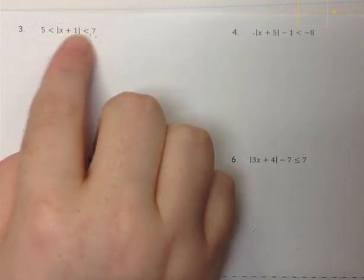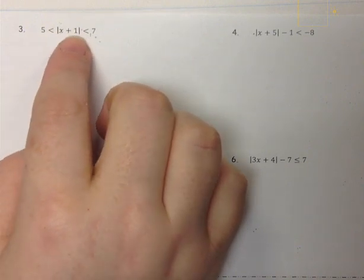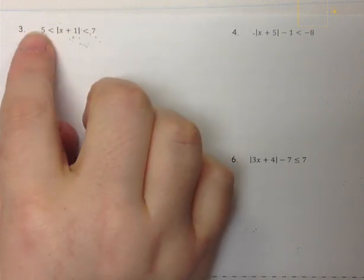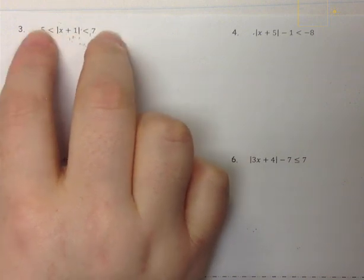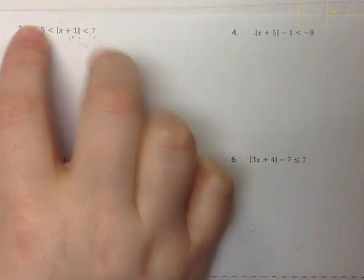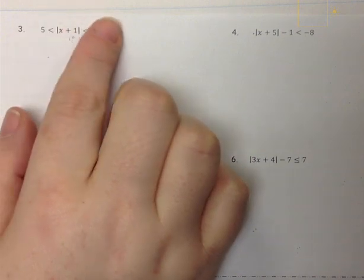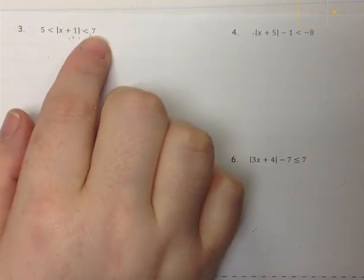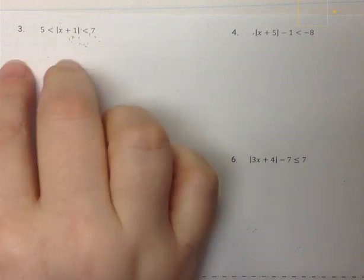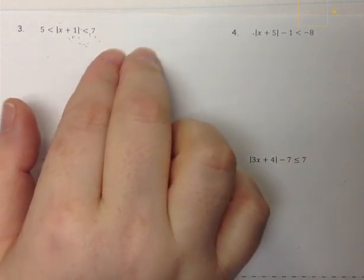In this example, we have 5 is less than the absolute value of x plus 1, which is less than 5. Because we have two values on the outside, this is already automatically an and problem overall, but we have to separate them into two different types of absolute values.